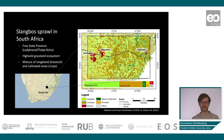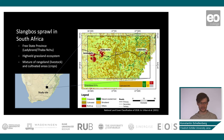In this tutorial we will analyze the slangbosh encroachment in South Africa. Slangbosh is a plant only endemic to South Africa but has been found to invade into native grassland ecosystems, for example in the province of Free State. This tutorial is situated between the towns of Ladybrand and Thaba Nchu on the border to Lesotho.